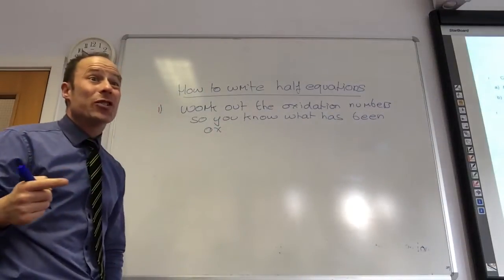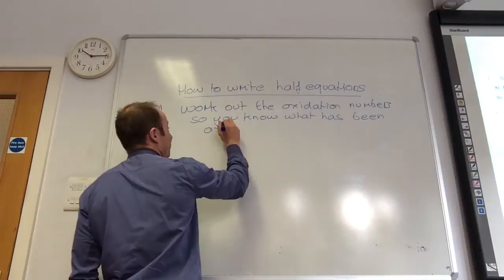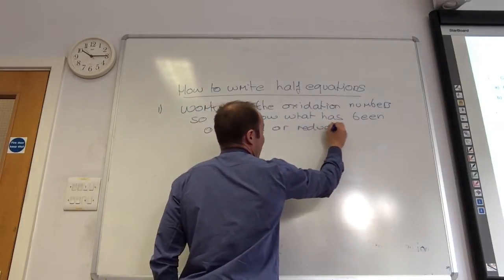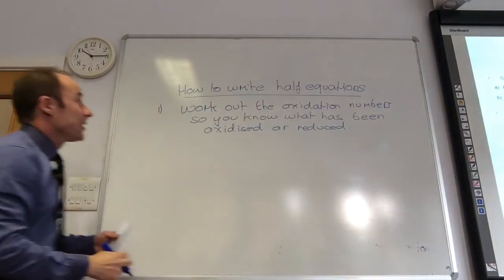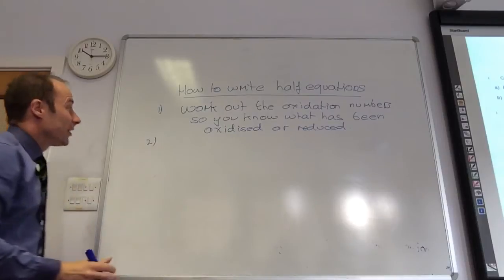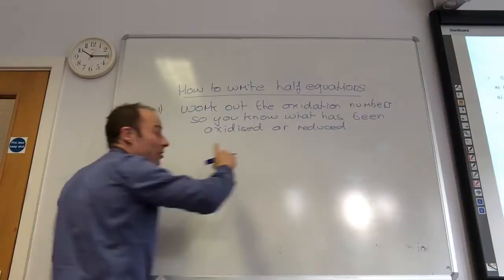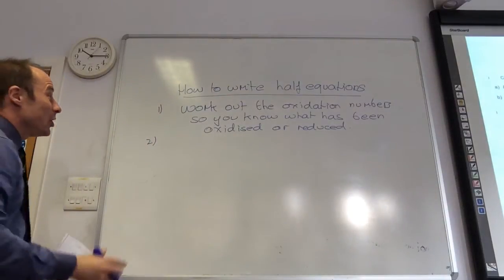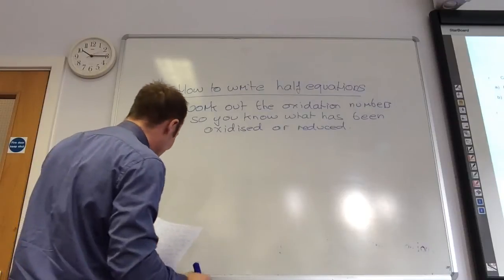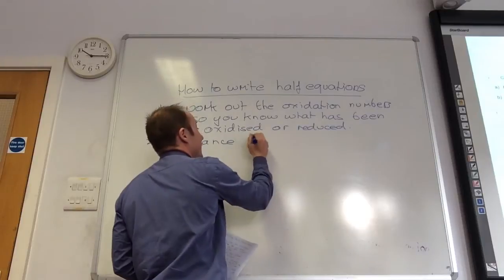Remember, because I'm in half equations, it's either going to show oxidation or reduction. That's your first step. After you've done that, you balance whatever has been oxidized or reduced. Make sure you've got the same number of atoms on both sides of the equation. So, balance the element that changes oxidized or reduced.